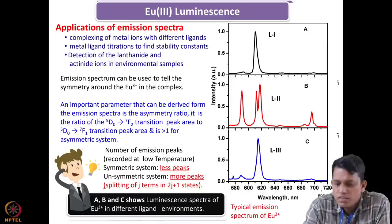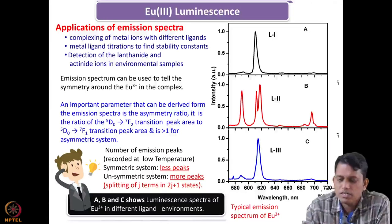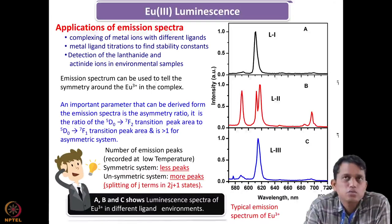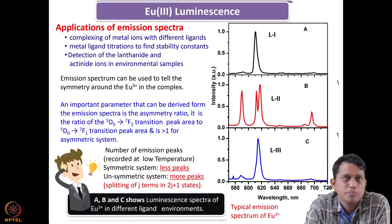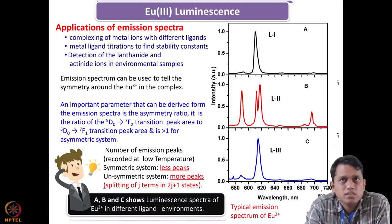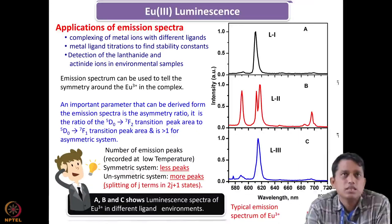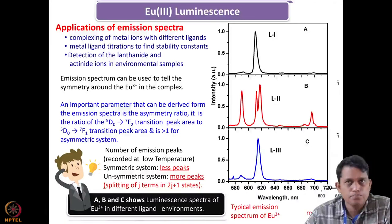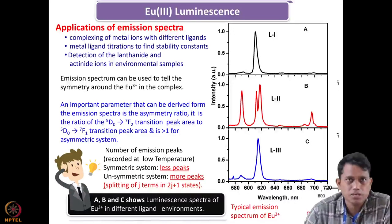This is direct information you can get. If you want stability information, you can do a titration — as done in absorption spectra — and from the titration data get the stability constant of that particular complex. This spectroscopy can also be used for detection of lanthanides and actinides in environmental samples. Detection of uranium in various environmental samples using laser fluorometry, which is a kind of emission technique, is very common. This is also used for understanding symmetry as well as quantification of metal ions in environmental samples.